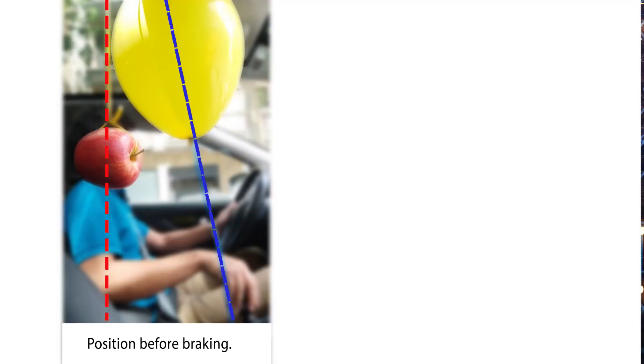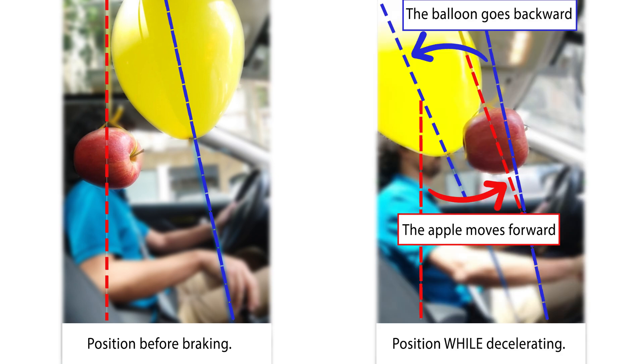Here's the position before the braking when the car is going at almost constant speed and the position during braking. You can clearly see how the balloon goes backward while the apple goes forward.